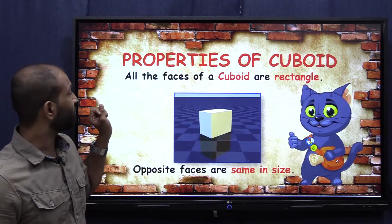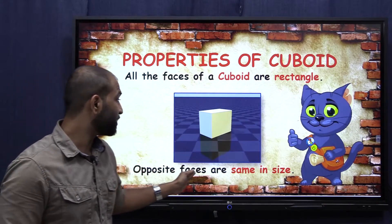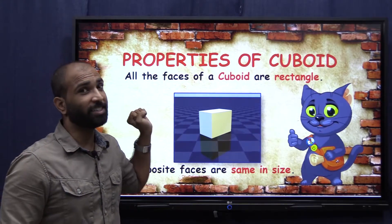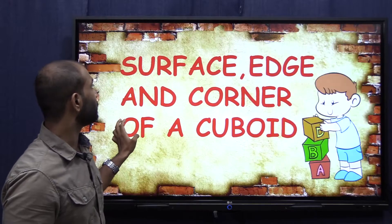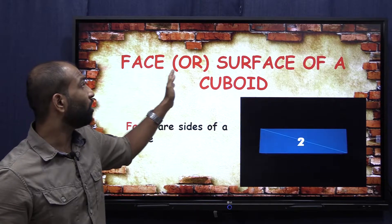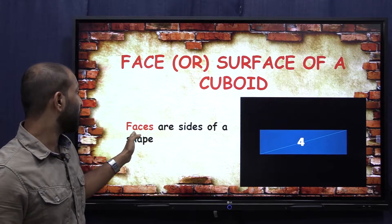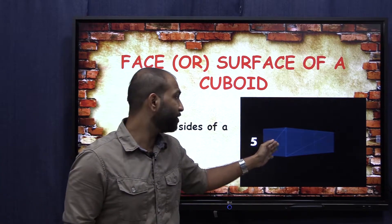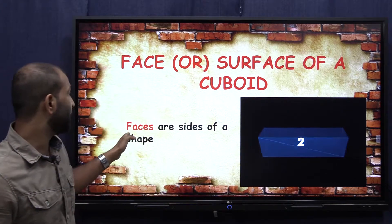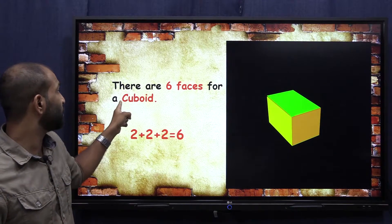Properties of a cuboid: all the faces of a cuboid are rectangles, and opposite faces are the same size. You have to know what a face is. Faces are sides of a shape — all these sides are known as faces. There are six faces for a cuboid.